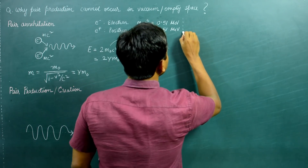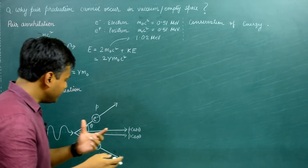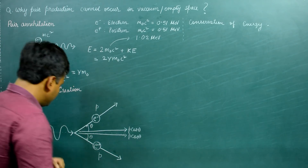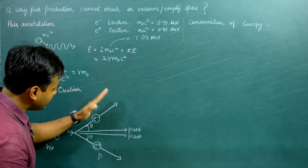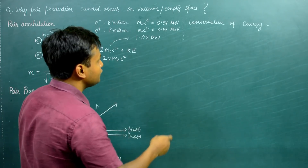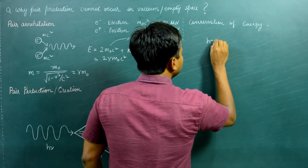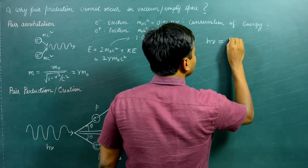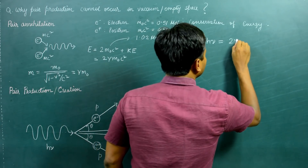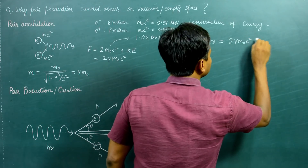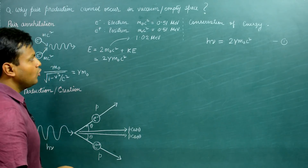Now let's write the conservation of energy. The total energy of the gamma photon, hν, equals the total energy of the electron and positron pair, which is 2γm₀c². So: hν = 2γm₀c². This is equation one, and it must hold true for conservation of energy.